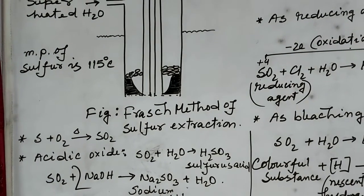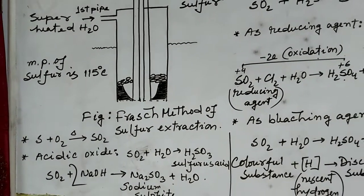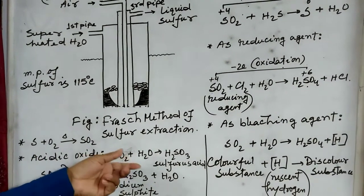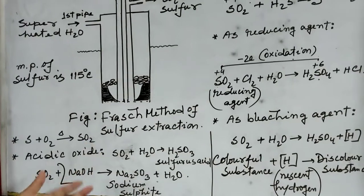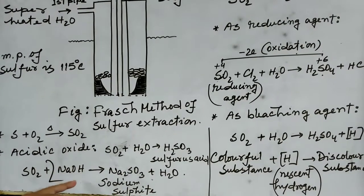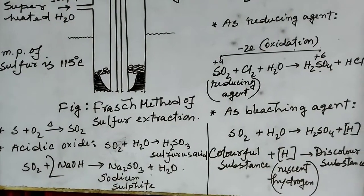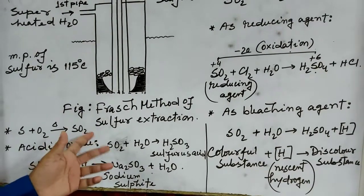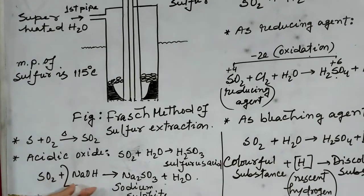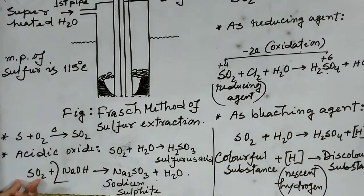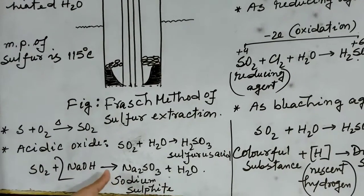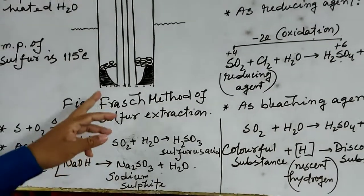The conditions for an acidic oxide are: the oxide must react with water to produce an acid, and it must react with a base to produce salt and water. It may not react with water, but it is mandatory that the oxide must react with the base. Sulphur dioxide reacts with sodium hydroxide to produce sodium sulphate salt.